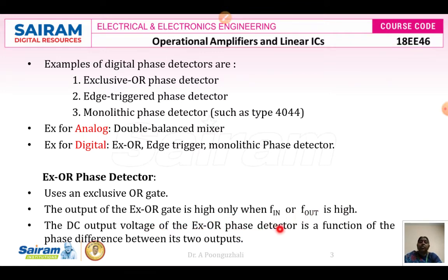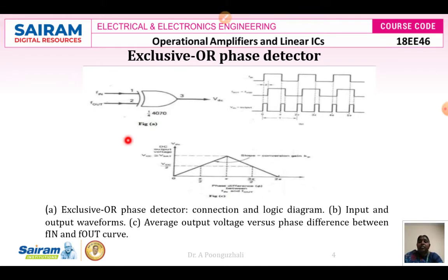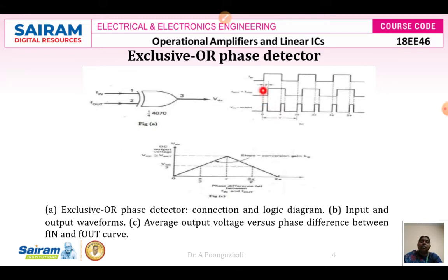The DC output voltage of the exclusive-OR phase detector is going to be a function of the phase difference between the two outputs. The two inputs to the phase detector are F-in and F-out, and the output is the DC voltage. F-in is a square waveform and F-out is also a square waveform but phase-shifted by phi. At time period T1, F-in is high but F-out is low, so the output of the phase detector is high.